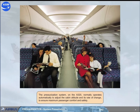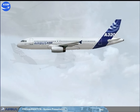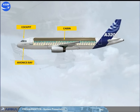The pressurization system on the F320 normally operates automatically to adjust the cabin altitude and its rate of change to ensure maximum passenger comfort and safety. The pressurized areas are the cockpit, the avionics bay, the cabin, and the cargo compartments.